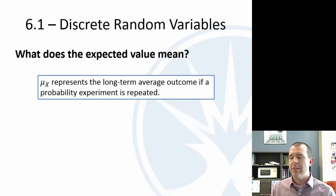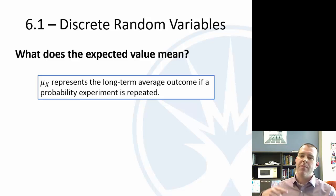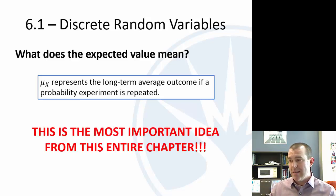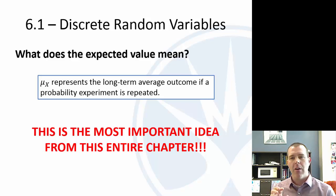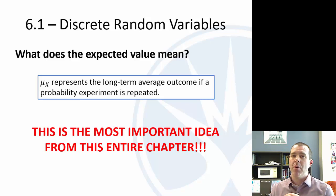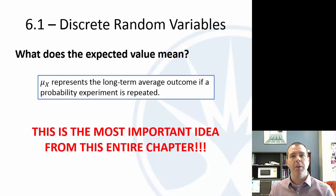So mu-sub-x, the mean of the random variable, represents the long-term average. If I repeat this experiment again and again, this is what I can expect. This is probably the most important thing from this whole chapter. There are other formulas we're going to learn, but understanding what the mean means and how to use it is really the most important thing — it's a key result used in a lot of different areas.